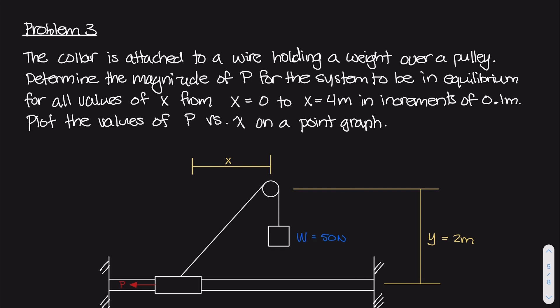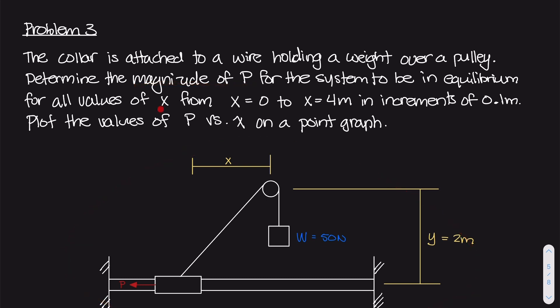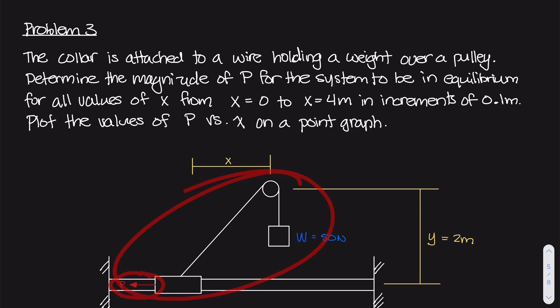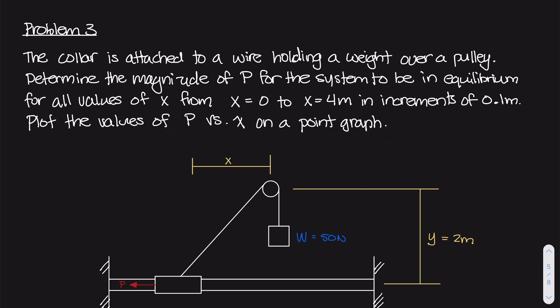The problem statement reads that the collar is attached to a wire holding a weight over a pulley. Determine the magnitude of P for this entire system to be in equilibrium for all values of x from 0 to 4 meters in increments of 0.1 meters. We need to calculate a P value for every increment of x, and then plot the values of P versus x on a graph.